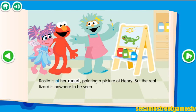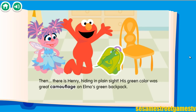Rosita is at her easel, painting a picture of Henry. But the real lizard is nowhere to be seen. Then, there is Henry, hiding in plain sight. His green color was great camouflage on Elmo's green backpack.